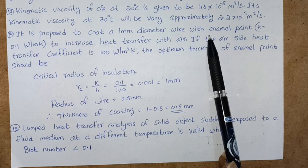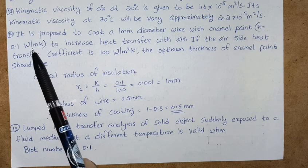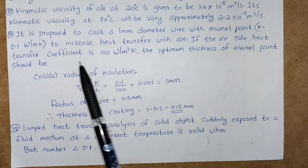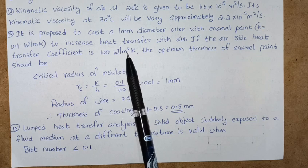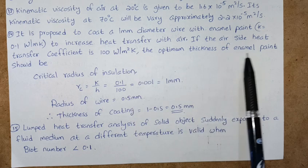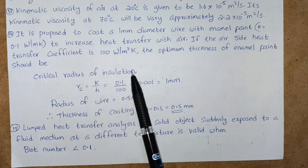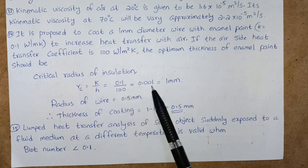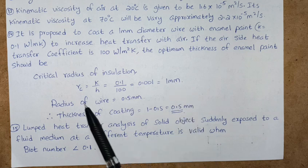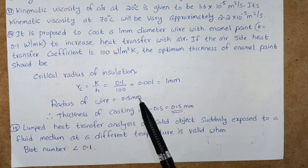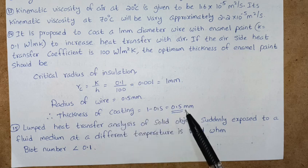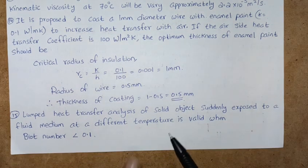Next, one more problem is there. It is proposed to coat a 1 mm diameter wire with enamel paint, k equals 0.1 watt per meter kelvin, to increase heat transfer with air. If the air side heat transfer coefficient is 100 watt per square meter kelvin, the optimum thickness of enamel paint should be—critical radius of insulation. So this is critical radius of insulation is k by h, so this is k and this is h. We are getting 0.001, that is equal to 1 mm, and radius of wire is 0.5 mm. So therefore thickness of coating is 1 minus 0.5, we'll get 0.5 mm.